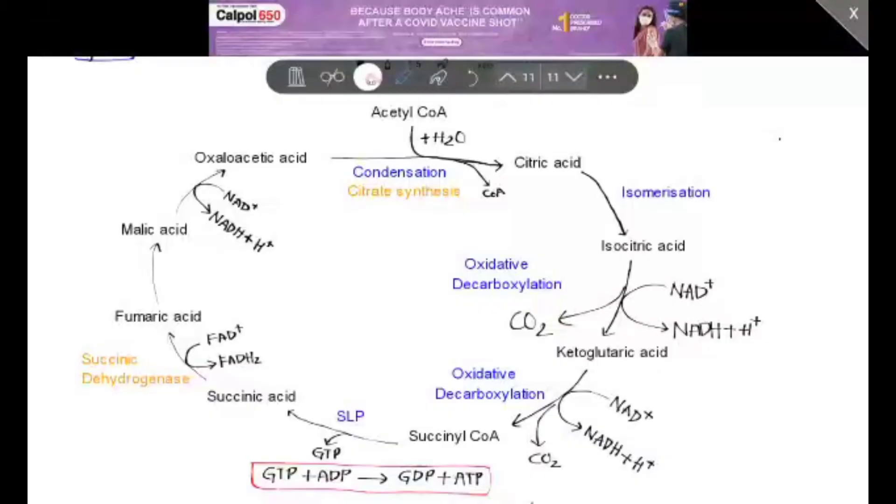Now, coming to the Krebs cycle, acetyl coenzyme A formed in the link reaction starts condensation with oxaloacetic acid and water to form citric acid by using the enzyme citrate synthase. Here, a coenzyme A molecule is released. Further, citric acid isomerizes to isocitric acid.